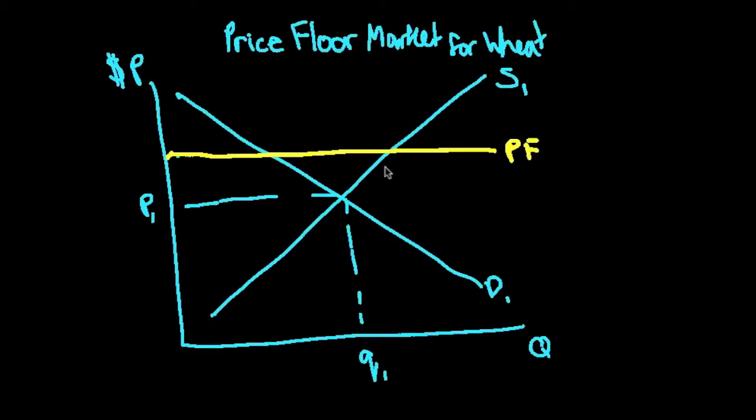So first let's find our quantity supplied. We go to the supply curve where it intersects with the price floor, there we get quantity supplied. And where the demand curve intersects with the price floor, we get the quantity demanded. So our quantity supplied is greater than quantity demanded.